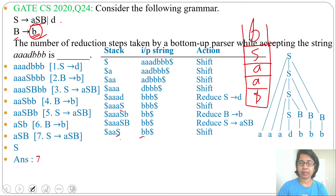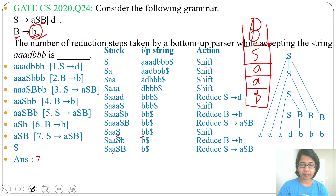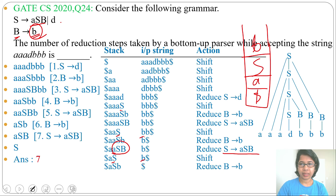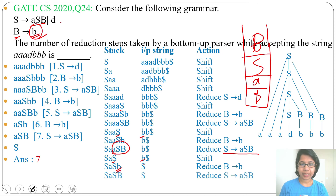We'll shift B onto the stack. Is the top of the stack a handle? Yes, this B can be reduced to B. Now the top of the stack is ASB, and that is a handle, so ASB can be reduced to S. Now the stack contains A, S. This S is not a handle, so we'll shift B onto the stack. Stack contains A, S, B. Is the top of the stack a handle? Yes, this B is a handle, so B can be reduced to variable B. Now the stack contains A, S, variable B — so ASB is a handle and can be reduced to S.